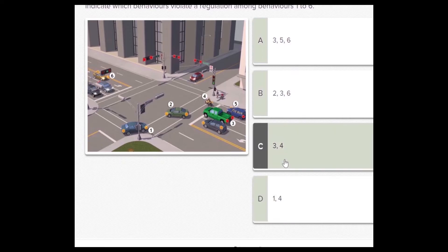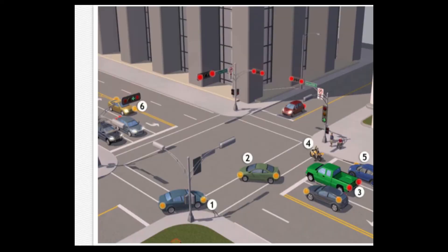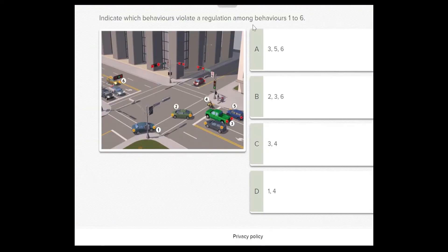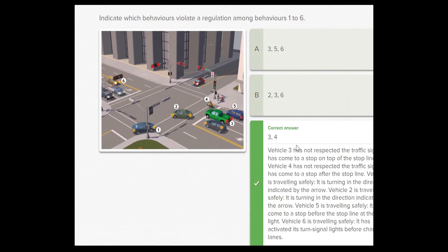We'll check vehicle number three and number one to make our final choice. Number three is already stopped on the walking line, same as vehicle number four. Vehicle number one is going right with signal lights turned on and a green arrow, so no problem. Our answer is choice C — easy, without needing to focus on all vehicle numbers.